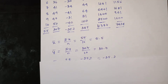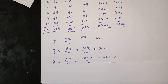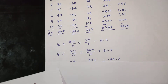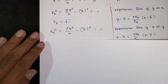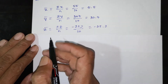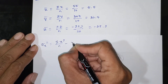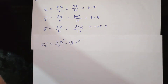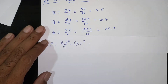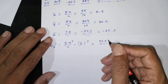Next, find x bar, z bar. The formula for sigma x square is: summation of x square divided by n, minus x bar whole square. Summation of x square is 385, n = 10.